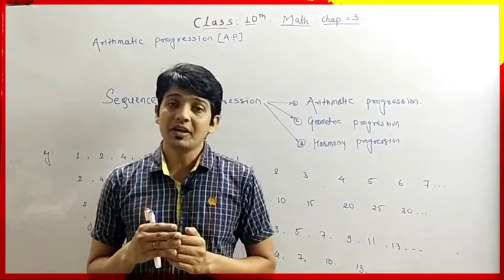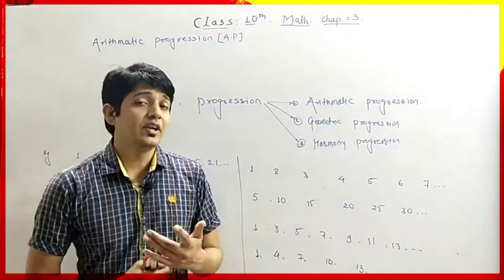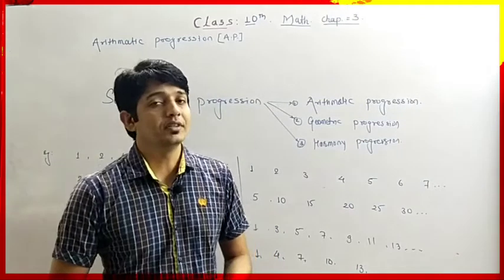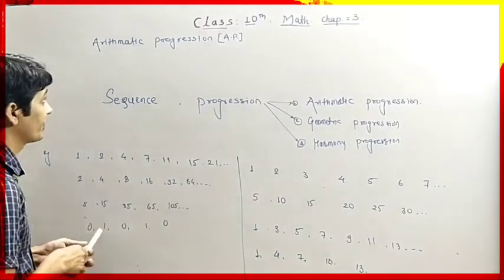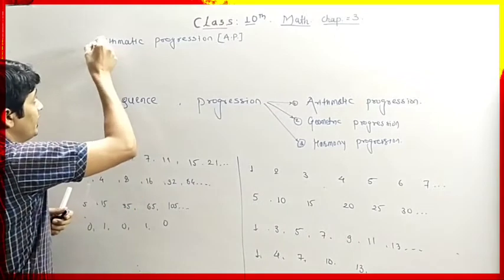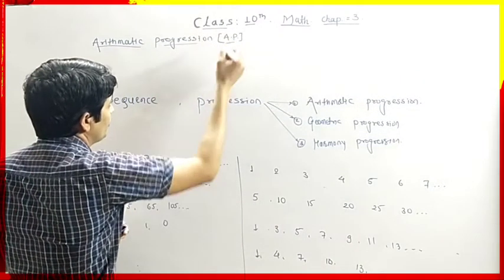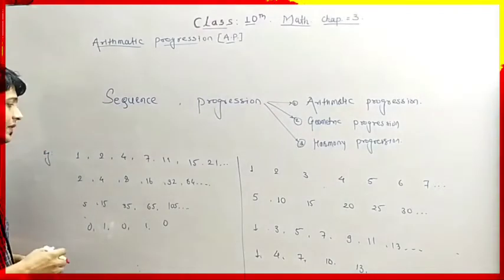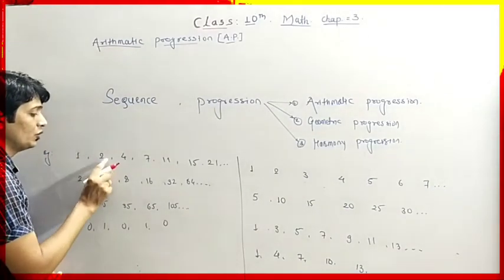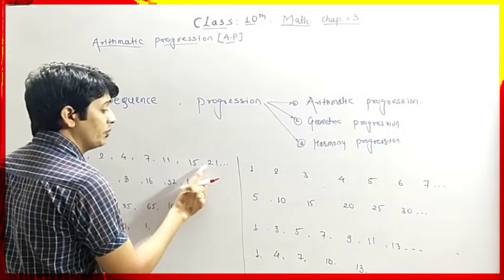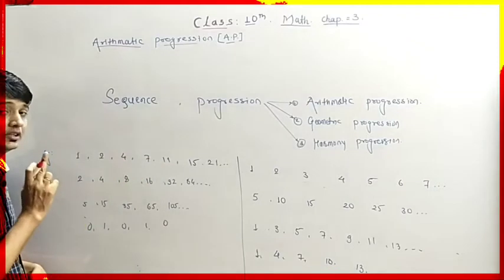Every consecutive number has a difference of 1. Let's take more examples of sequences. This chapter is Arithmetic Progression — in short, we call it AP. Here we can see the sequence 1, 2, 4, 7, 11, 15, and 21. This is again one sequence, and we have to check the relation in that sequence.